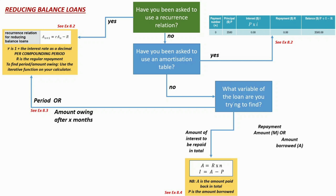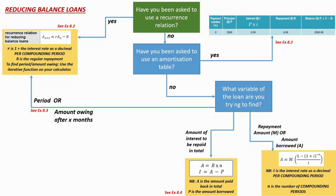Lastly, you might be asked to find the repayment amount or the amount initially borrowed. In both cases, you're going to use the present value formula for an annuity. A reducing balance loan is a type of annuity because there is compounding and a regular consistent repayment. We use the present value formula because we want to find how much was borrowed in the present, not how much of the loan is left in the future. A is the amount initially borrowed and M is the recurring repayment.